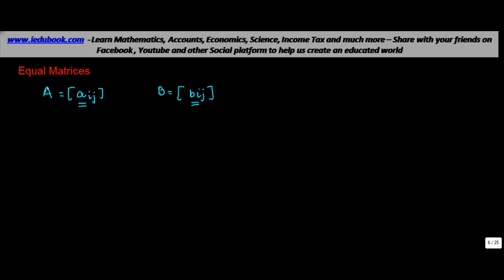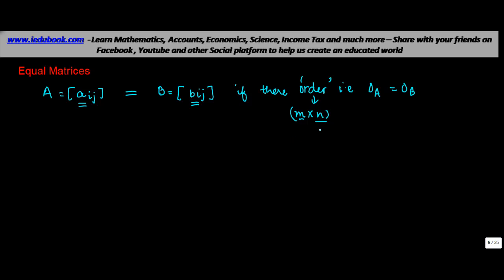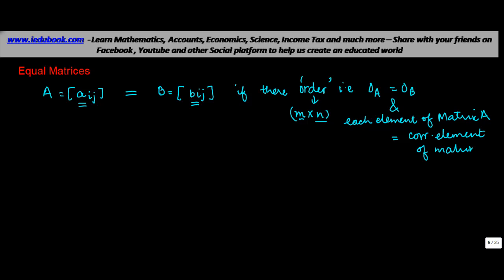Two matrices A and B are equal if their order is equal — that is, order of A is equal to order of B. Order means number of rows into number of columns, where M and N represent the number of rows and number of columns. And each element of matrix A must be equal to the corresponding element of matrix B.